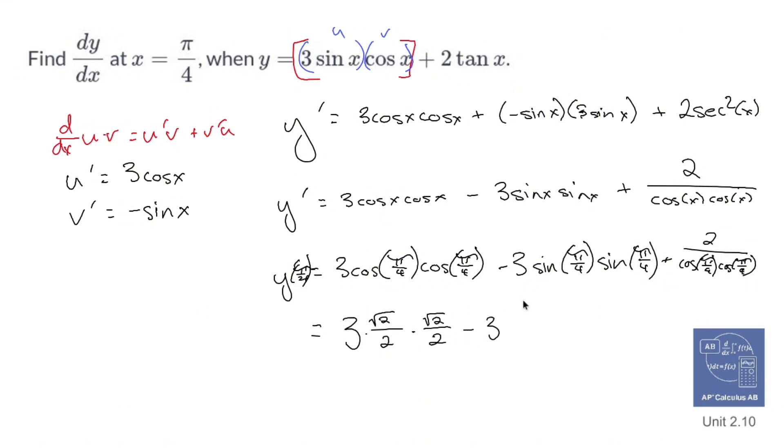also, this is nice, sine of pi over 4 is also root 2 over 2 times root 2 over 2. Now, why is this good?